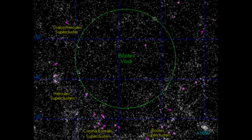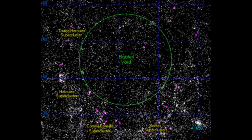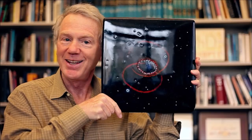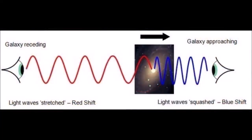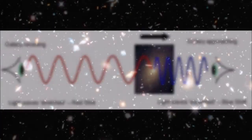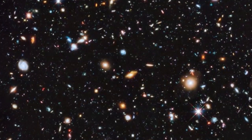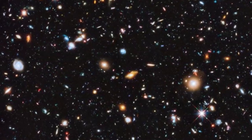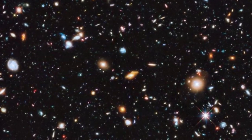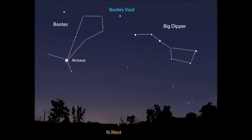Boötes Void is a massive, empty region of space unlike anywhere else known. It was discovered in 1981 by Robert Kirshner and his team as part of a survey of redshifts, a study of massive interstellar objects moving away from us in the observable universe, when by chance they discovered a gargantuan spherical region of space located in the Boötes constellation approximately 700 million light years from Earth.